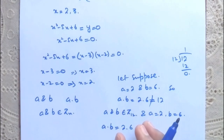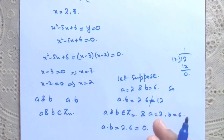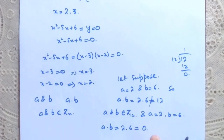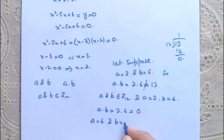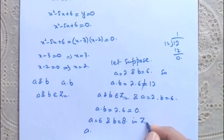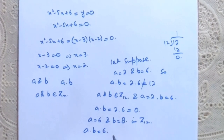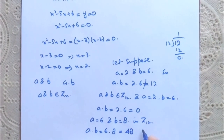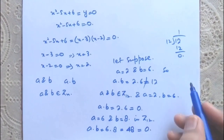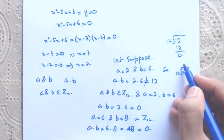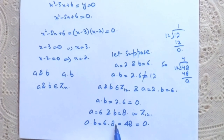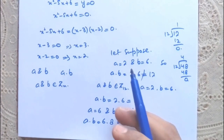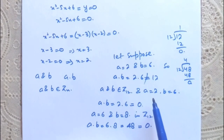It means that the product a·b, where a = 2 and b = 6, is equal to 0 in Z₁₂. So it is not necessary that the product of two numbers is 0 only when one of them is 0 — the product of two non-zero numbers can also equal 0. Similarly, if a = 6 and b = 8 in Z₁₂, then a·b = 6·8 = 48, and 48 in Z₁₂ equals 0 because 48 leaves remainder 0 when divided by 12. This is where the concept of zero divisors starts. Let's see the formal definition of zero divisors.